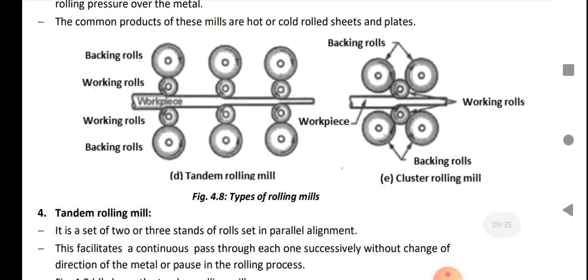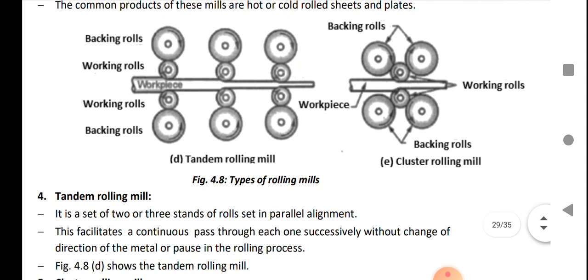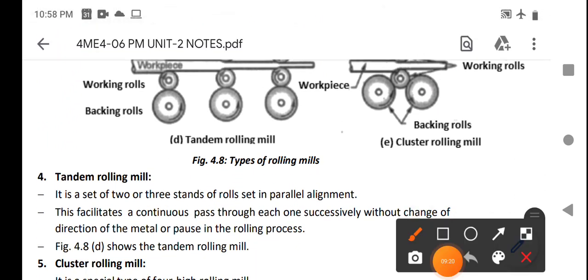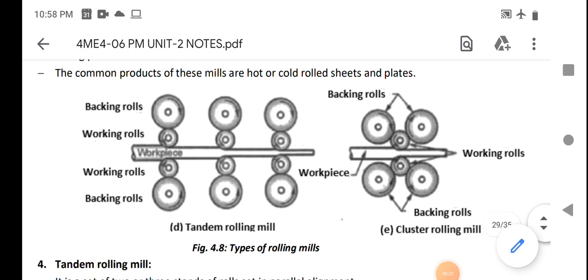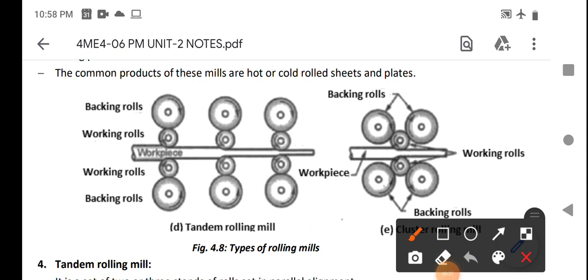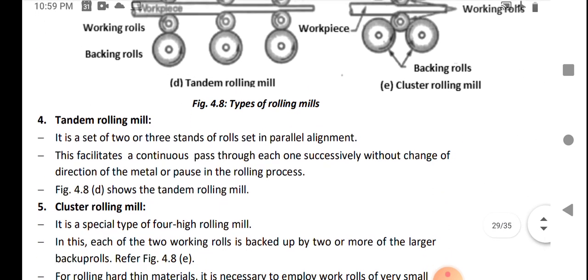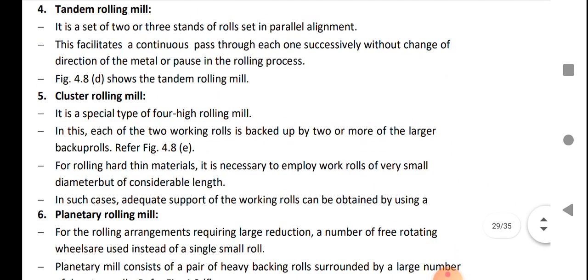In tandem rolling mill, we use many number of four-high rolling mills in sequence, as you can see in this figure. Multiple sets are used to achieve continuous reduction. This is called a tandem rolling mill.